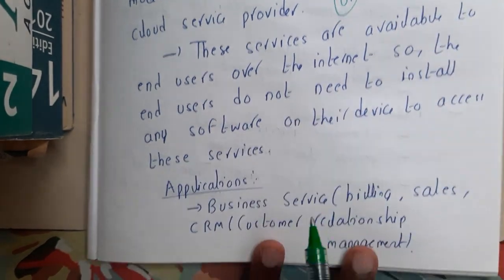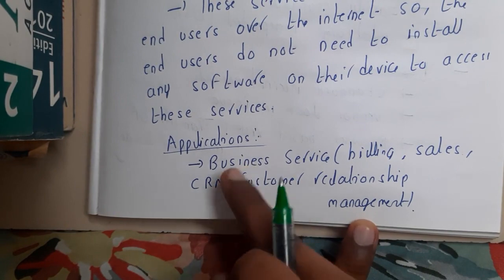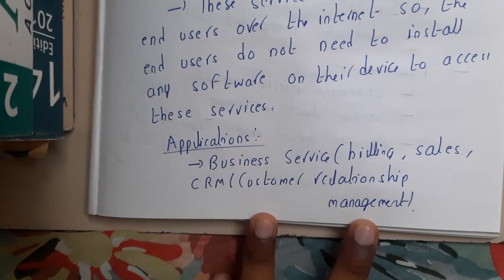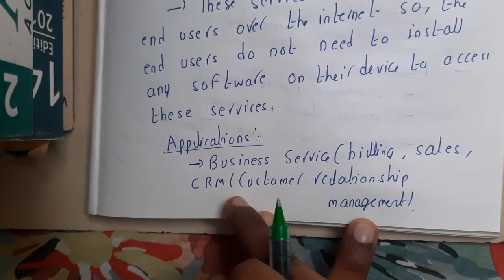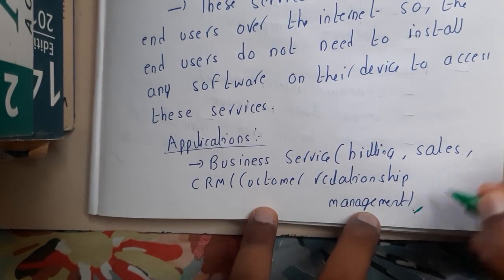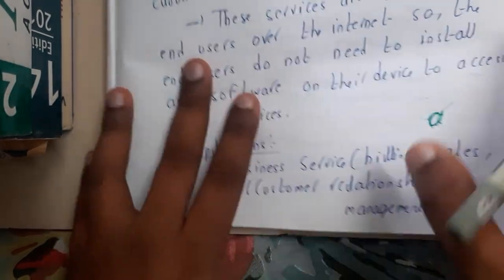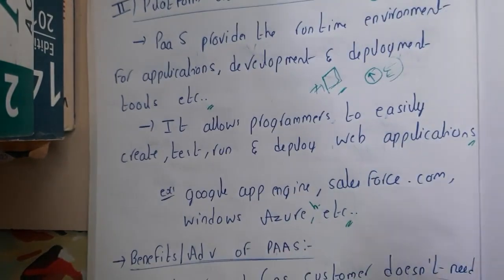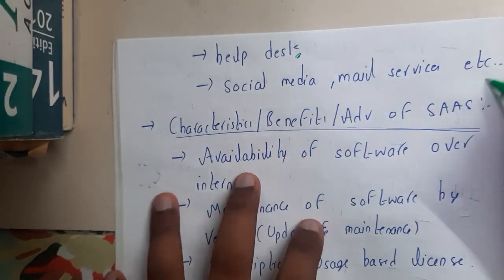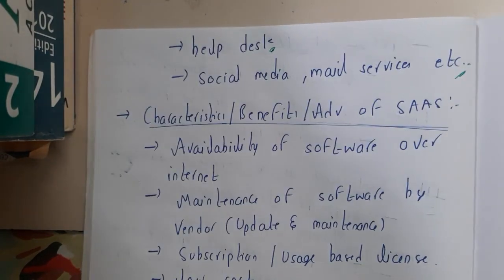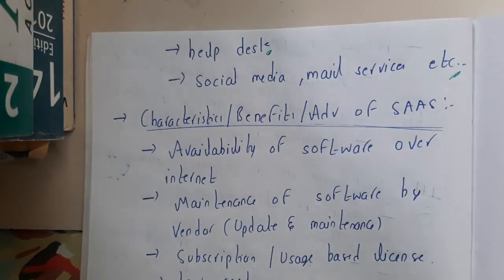Now let us go through some applications of SaaS. Popular applications include billing, sales, CRM (Customer Relationship Management), and similar things. Wherever a user can directly use the application online, those count as applications or examples of SaaS. This includes help desks, social media, mailing services — everything you are using online where you are visiting websites for some service.